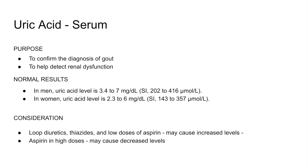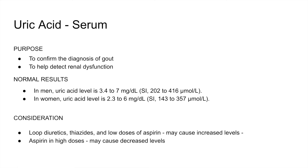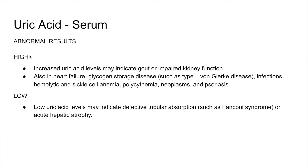Serum uric acid level is primarily used to identify gout or detect renal dysfunction, since uric acid is excreted through the kidneys. Loop diuretics, thiazides, and low-dose aspirin may increase uric acid levels, while high-dose aspirin may cause decreased levels. Various disease processes can cause abnormal results, both elevated and low serum uric acid levels.